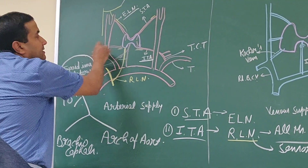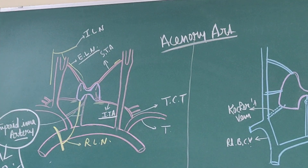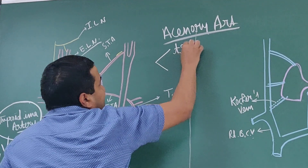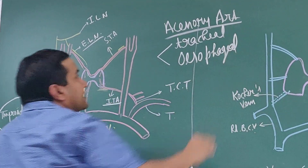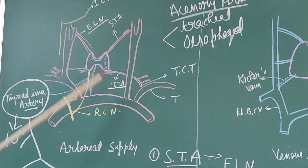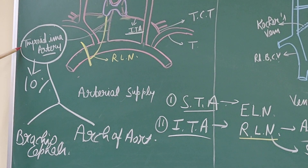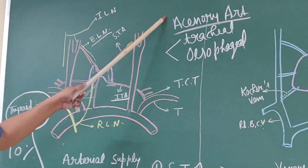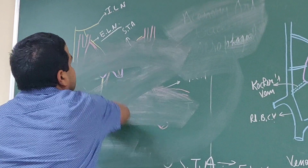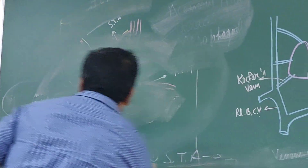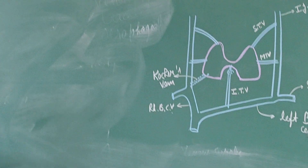Additional branches supplying the thyroid gland include the tracheal and esophageal branches. Regarding venous drainage, generally veins follow the arteries, but in the case of the thyroid gland, the veins do not follow the arteries.